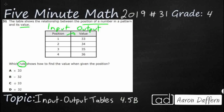So let's take these inputs — they're pretty easy to work with: 1, 2, 3, 4. Let's just use all of these rules and see if we get to our correct values. Let's start with option A, times 33. We're going to see if this rule of times 33 gets us to our values. We should be getting 33, 34, 35, and 36.